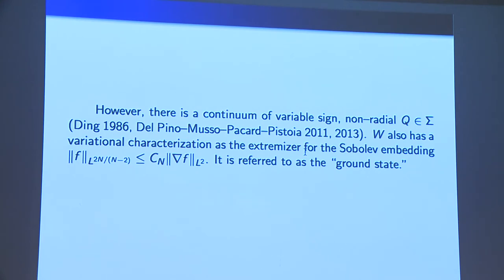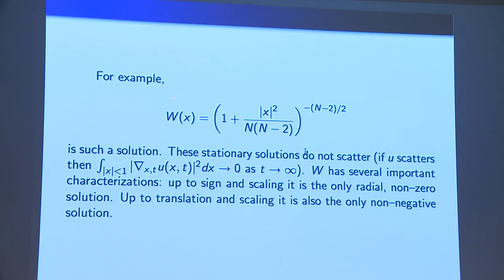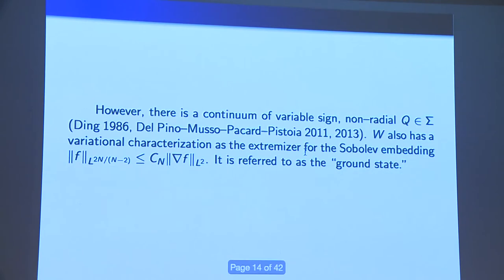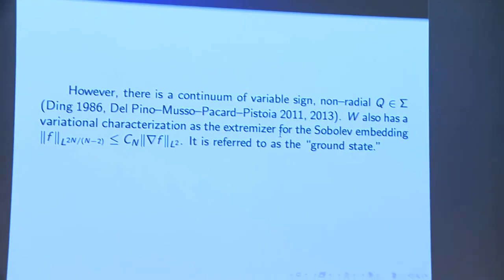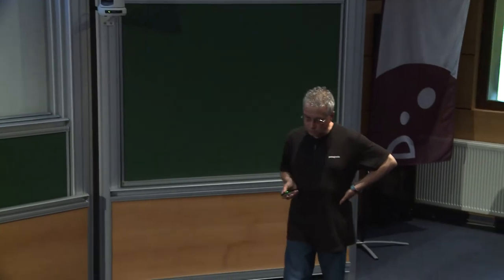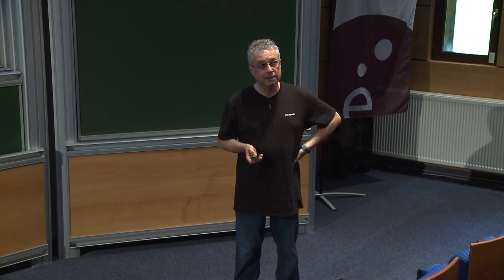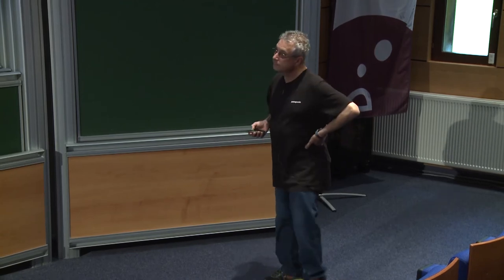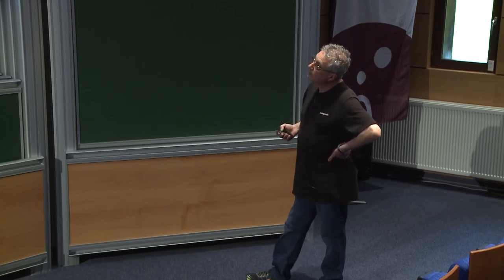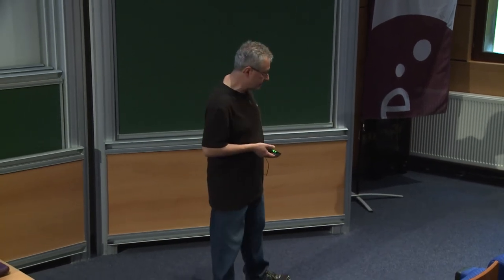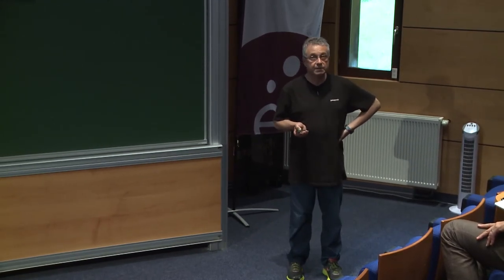Our W has a variational characterization: it realizes the best constant in the Sobolev embedding L6 contained in gradient L2 in 3D. This is a result of Aubin and Talenti, though in the radial case it was already proved by Bliss in the 1920s. This variational characterization means W is the non-zero elliptic solution with the least amount of energy — because of this, it is called the ground state.